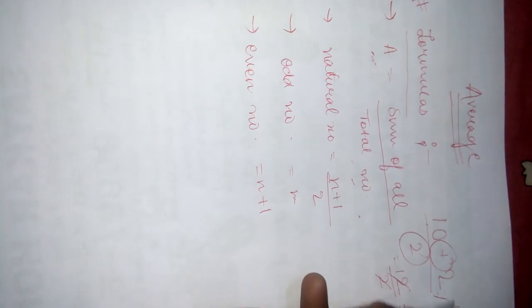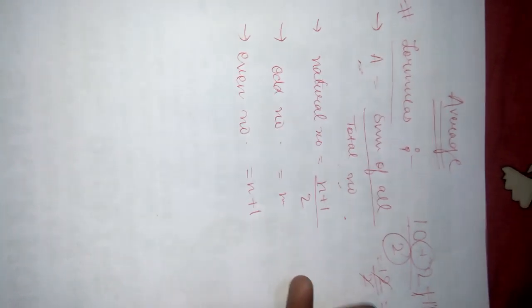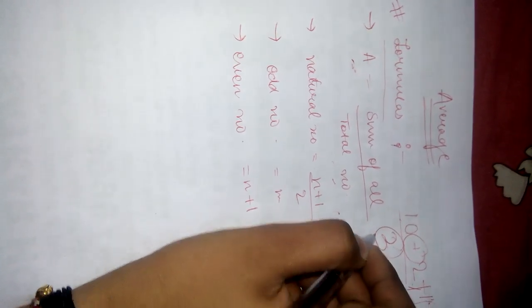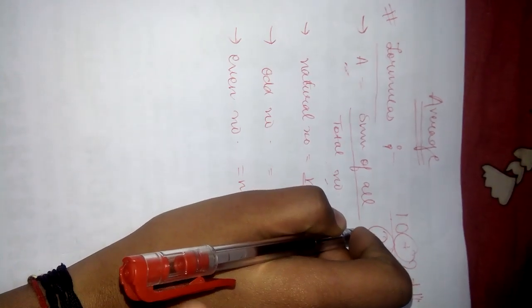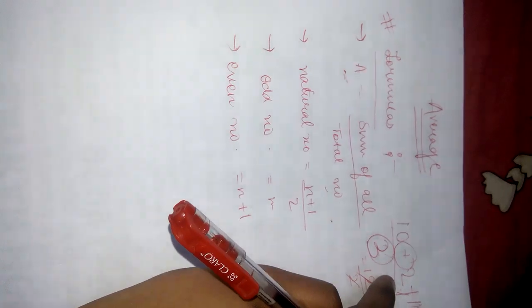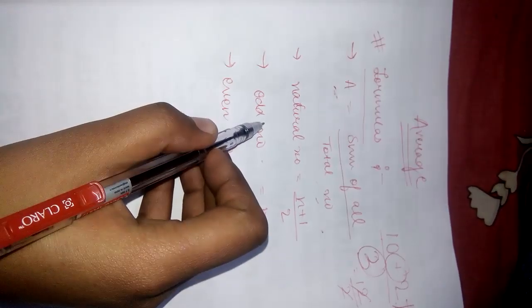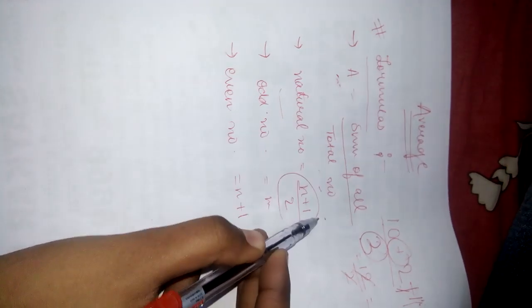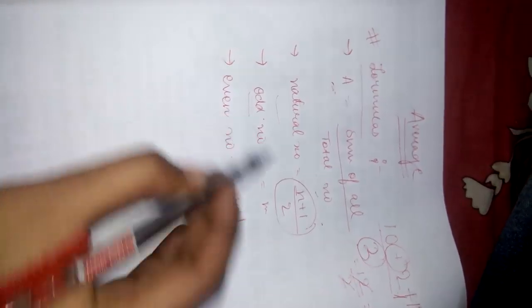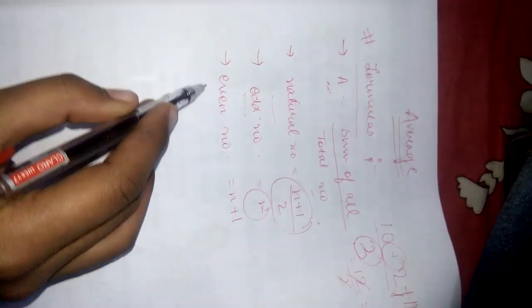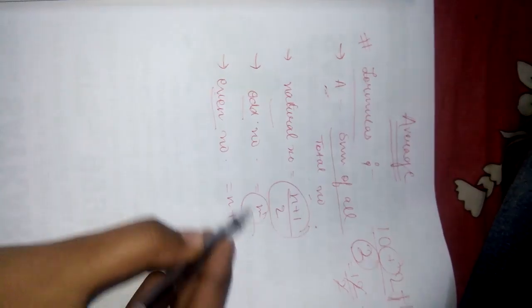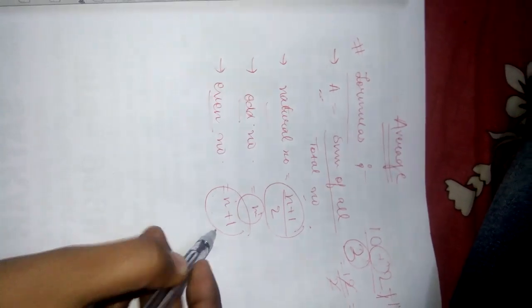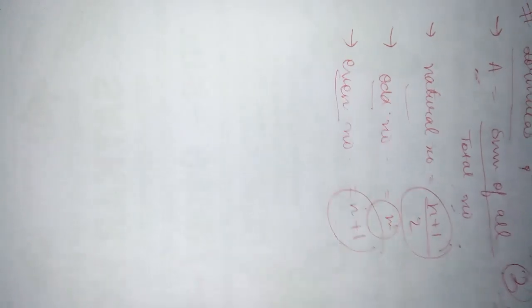If there would be one more thing that is 1 then the number will change to 3. And if the average is going to find for a natural number, then the formula used will be this. If it would be an odd number then the formula is n. If it would be an even number then we are going to add n plus 1. So I am going to start with the question of class 7th, chapter Average.